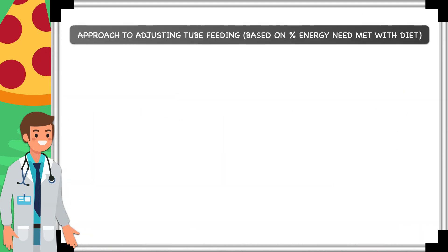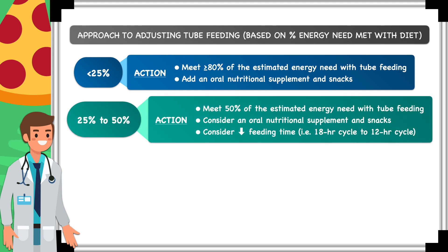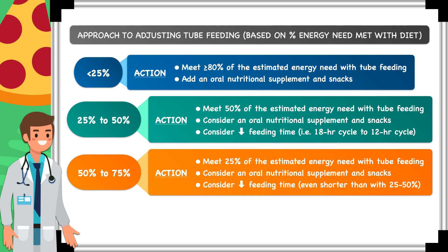Using the intake data and subjective information obtained from the patient, here is my approach to adjusting tube feeding. If the patient is meeting less than 25% of the estimated energy demand by mouth, I continue to meet at least 80% through tube feeding and add an oral nutritional supplement and snacks. If meeting 25–50%, I adjust tube feeding to provide 50% of it, consider adding supplements and snacks, and reduce the feeding time — whether going from continuous to cyclic, an 18-hour to a 12-hour cyclic infusion, or from one-hour to 30-minute intermittent feeding. If meeting 50–75%, I adjust tube feeding to provide 25% of estimated energy demand and consider supplements, snacks, and a shorter feeding time.